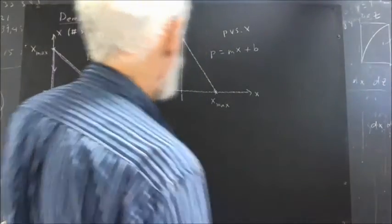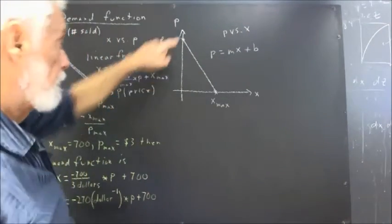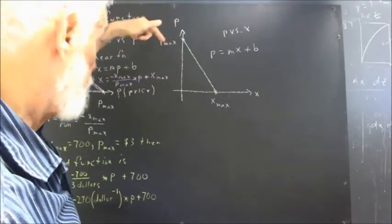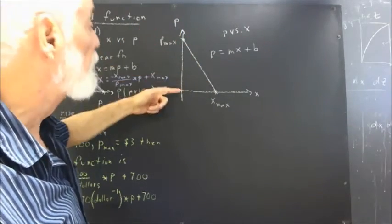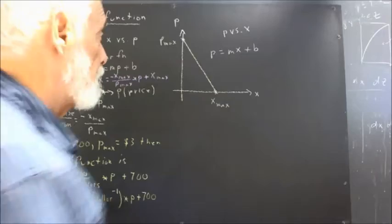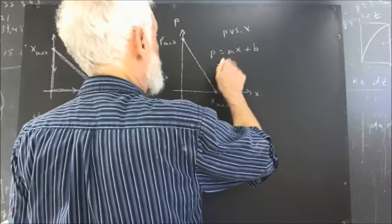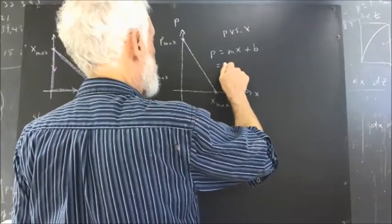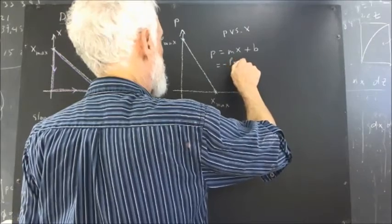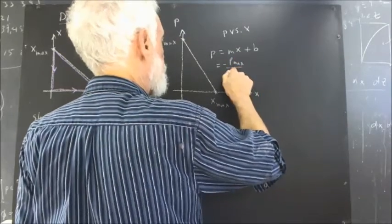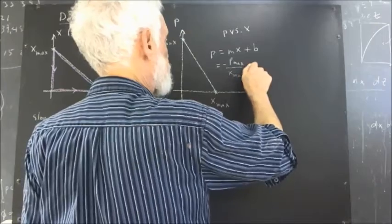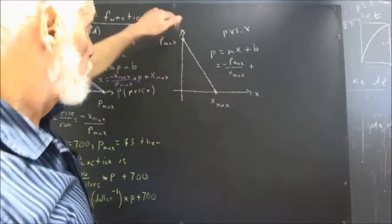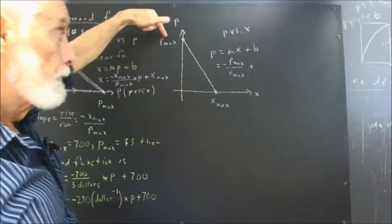The slope here: from one intercept to the other, the rise is negative P-max and the run is X-max. So M equals negative P-max over X-max, and B — the vertical axis intercept — is P-max. So P equals negative P-max over X-max times X plus P-max.